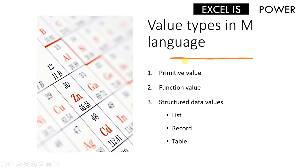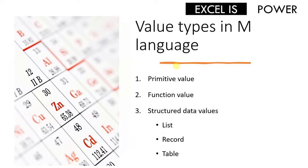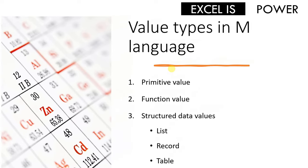In the next section, we are going to talk about value types in M language. We have three types: the first one is primitive value, the second is function value, and the last one — which we'll discuss at the beginning of the next part — will be structured data values, focusing on lists, records, and tables. Let's go directly and start the discussion around primitive values.